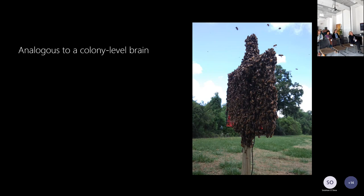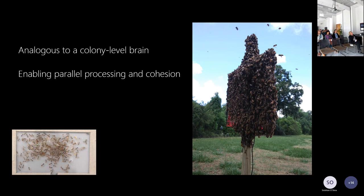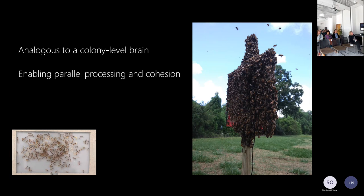The nice thing about honeybee swarms is they're able to assess many different nest sites across the landscape — for miles around — which is really a case of parallel processing, but at the same time very cohesive because all of this information is brought back to the swarm and it's able to make the best possible selection. I always like to make a comparison that insect colony democratic processes are usually very cohesive because everyone has the same goal, which can be contrasted to human democracy.